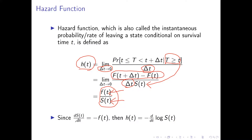Since the derivative of uppercase S of T with respect to time T equals the negative of the probability density function, lowercase f of T, we can derive that the hazard function is also equal to the negative of the derivative of the log of the survivor function with respect to time T.